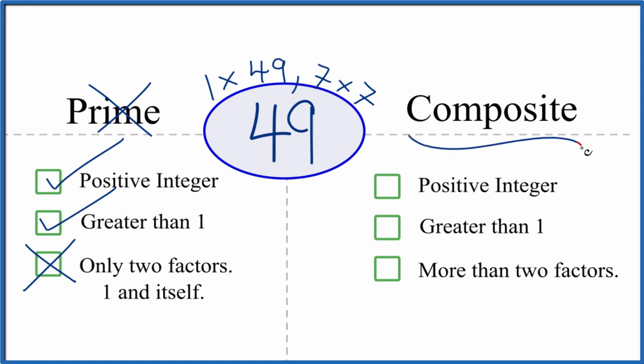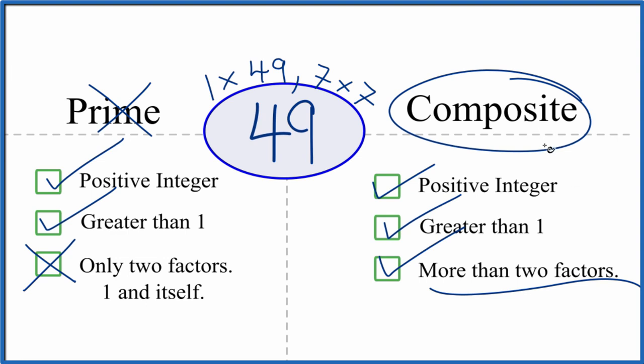But is it a composite number? It's a positive integer, it's greater than 1, and there are more than two factors. There are 1, 7, and 49 - three different factors that go evenly into 49. More than two factors means 49 is a composite number.